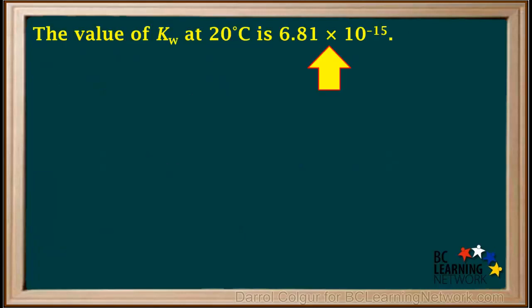Here's the example question. We're given that the value of Kw at 20 degrees Celsius is 6.81 times 10 to the negative 15th.